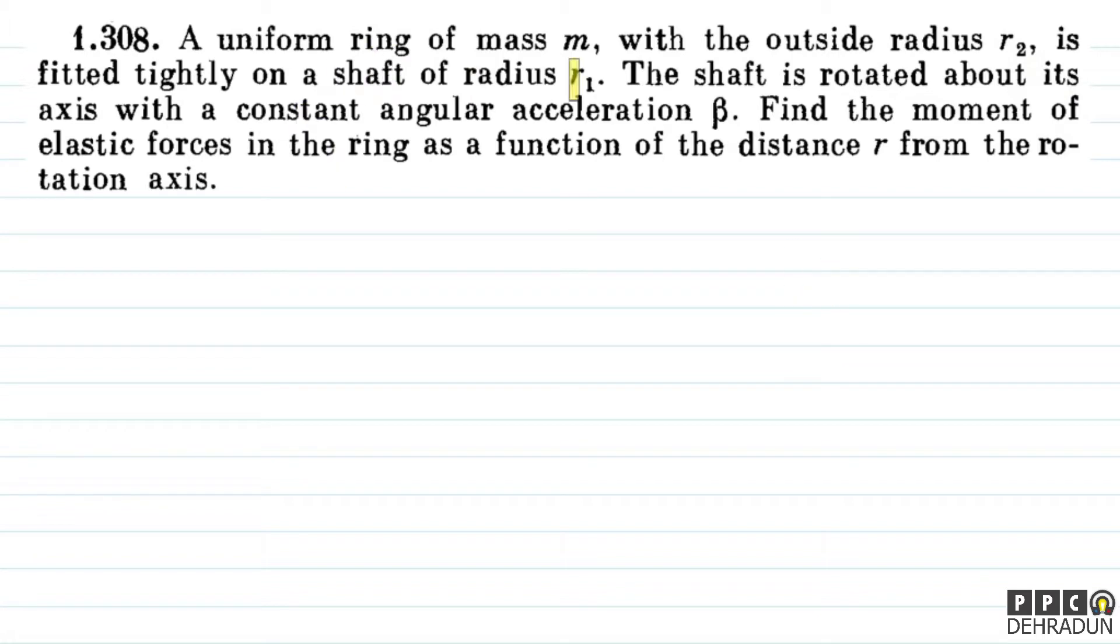The question says: a uniform ring of mass m with the outside radius r2 is fitted tightly on a shaft of radius r1. The shaft is rotated about its axis with a constant angular acceleration beta. Find the moment of elastic forces in the ring as a function of the distance small r from the rotation axis.